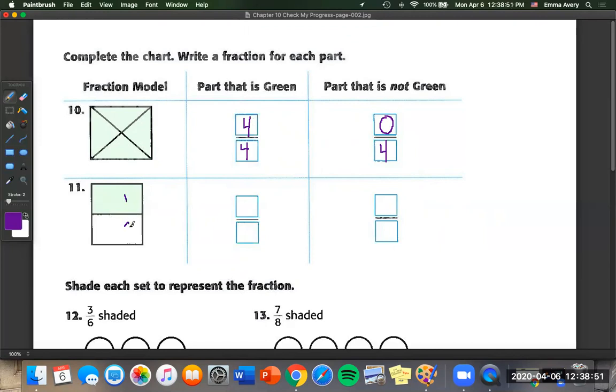On to 11. So we have one, two pieces. So that's our denominator, our total. And the part that is green, just one. So the part that's not green, also one.